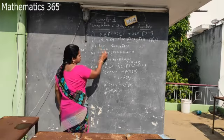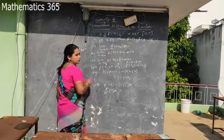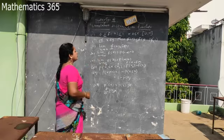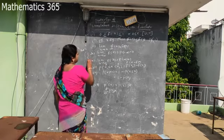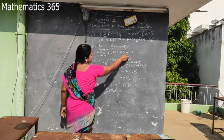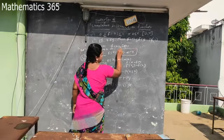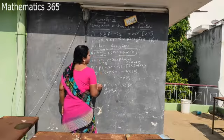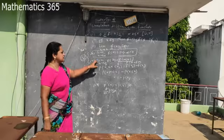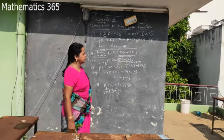As the limit extends to a, F of x is equal to F of a — this is the right-continuity property of capital F of x. As the limit extends to infinity, F of minus infinity equals 0, and F of plus infinity equals 1. That is, the limit of F of x as x goes to infinity equals 1.